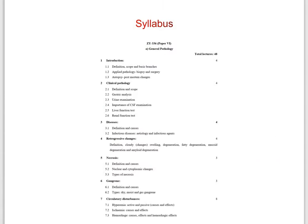First we come to the syllabus discussion. Your first chapter is the introduction, with subchapters such as definition, scope, and basic branches of pathology. Then the next point is applied pathology, covering biopsy and surgery. After that, autopsy and postmortem changes. These topics are covered under the first chapter. Now the second chapter is clinical pathology.